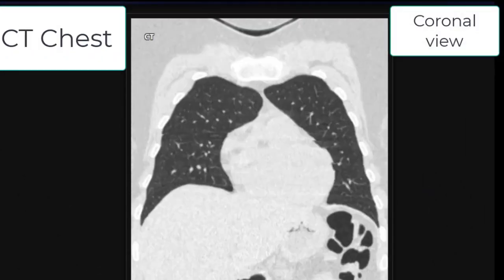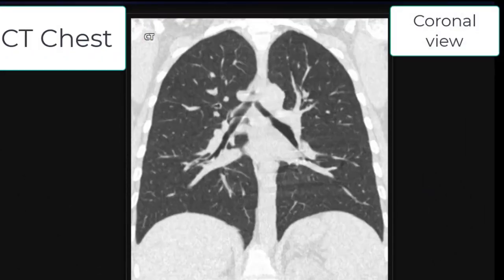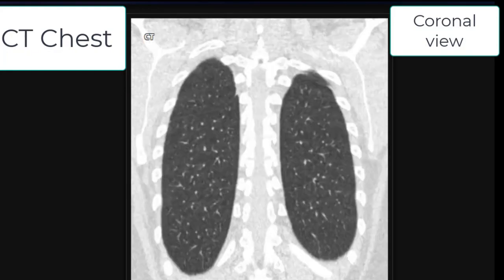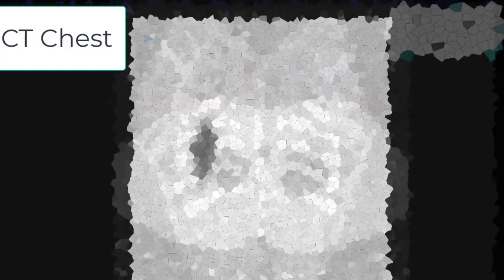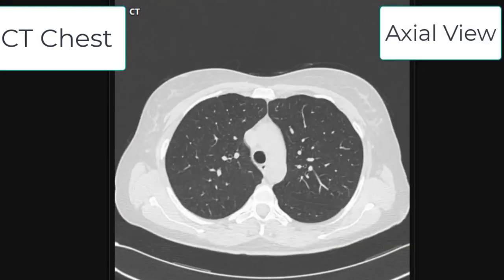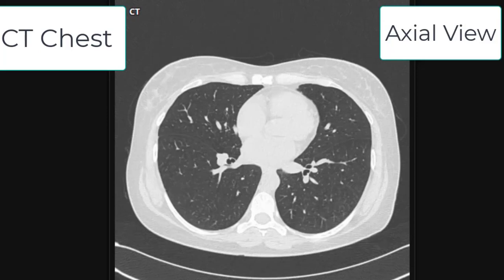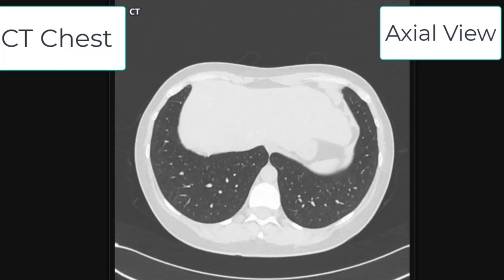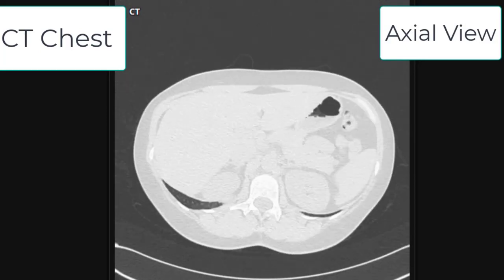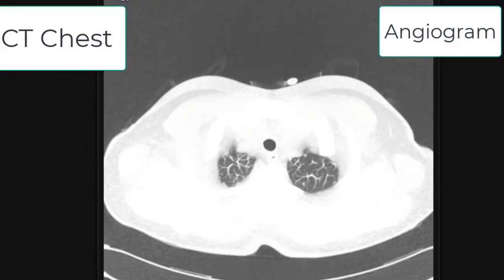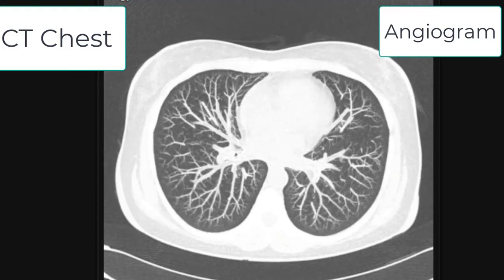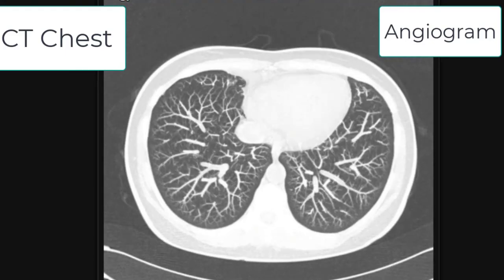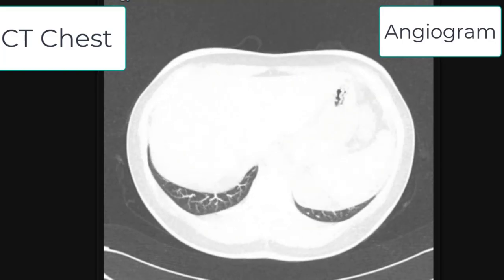This is the CT chest in coronal view, showing the anterior-posterior view of both lung fields. This is the CT chest in axial or transverse view, showing both lung fields and the heart. This is the CT angiogram of the chest, showing the vasculature of the lungs in a normal patient.